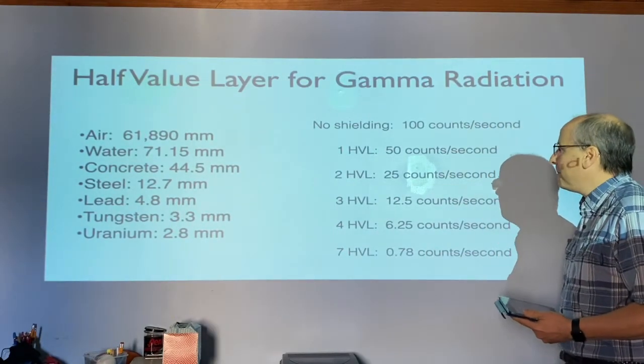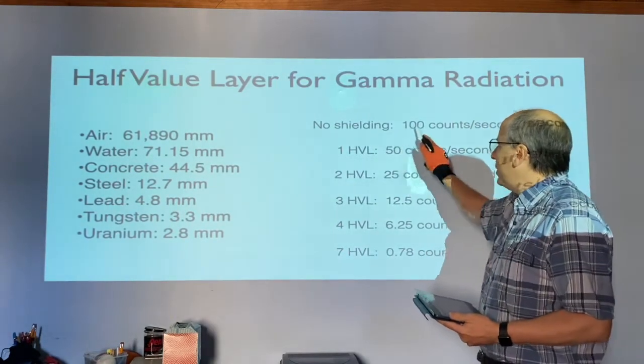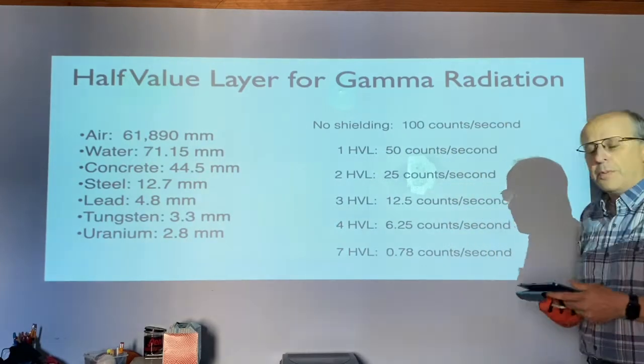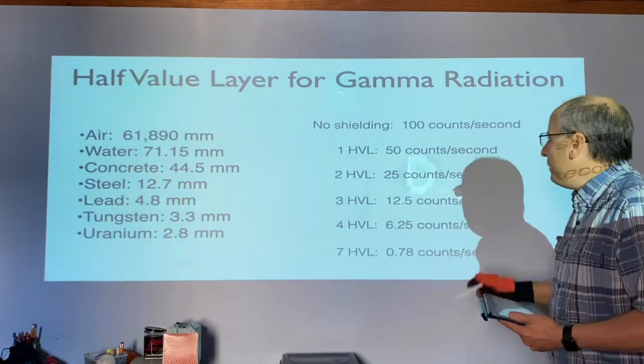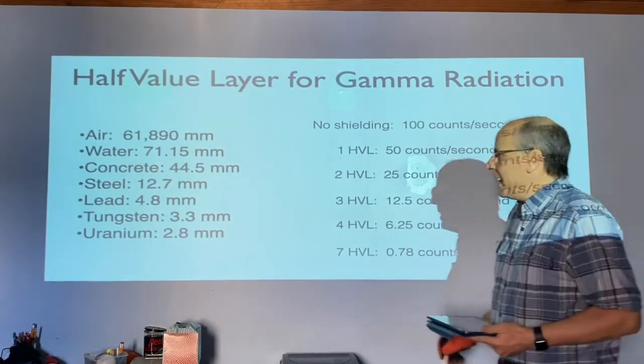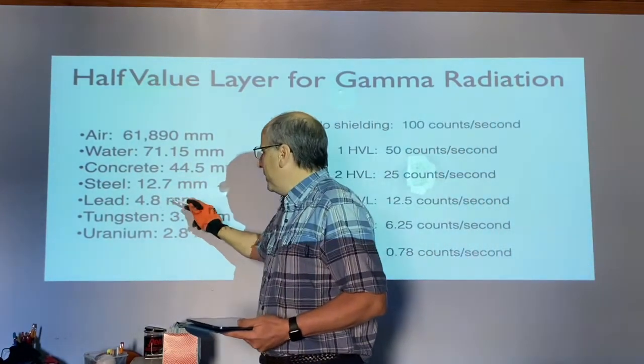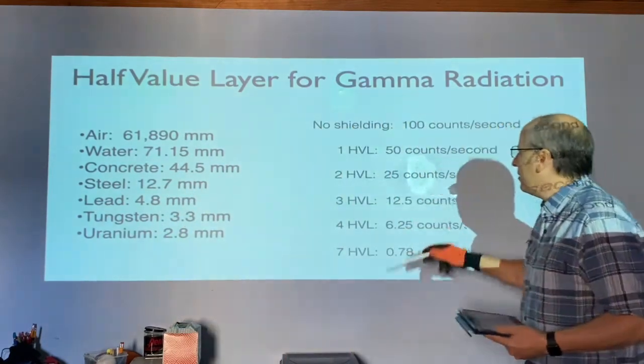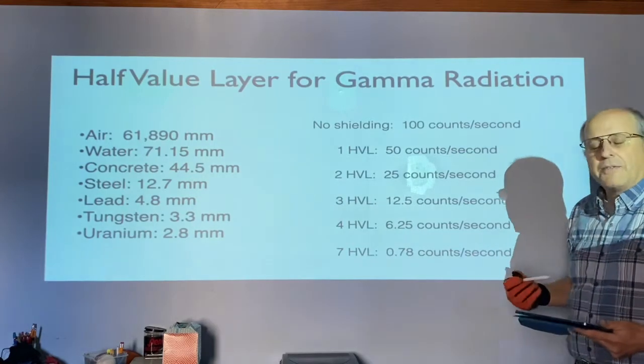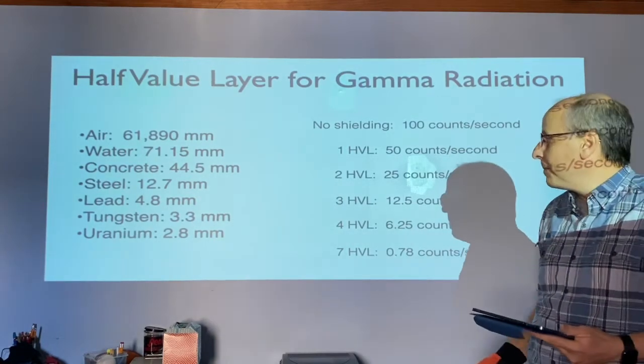So what does this mean? Let's say if you had no shielding, a hundred particles were hitting you per second. If you were to put a half value layer, that would mean 4.8 millimeters of lead or 12.7 millimeters of steel, only half of that radiation would get through.